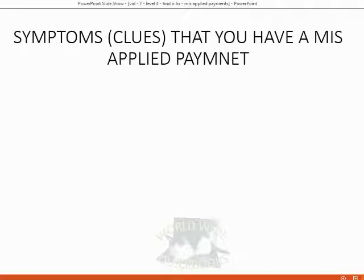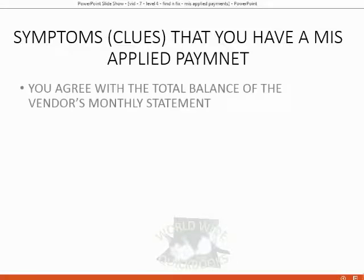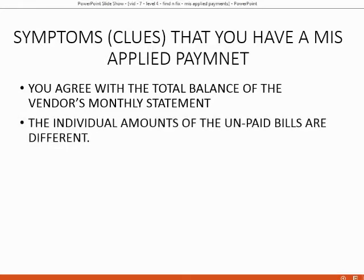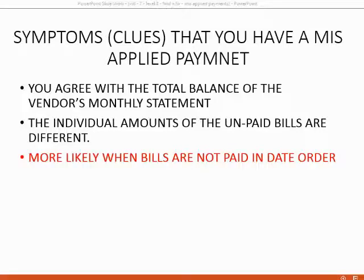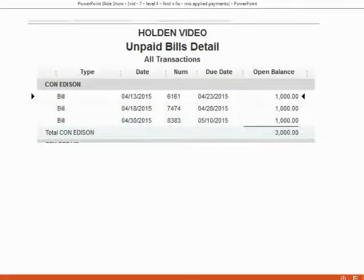Some of the symptoms or clues that you have a misapplied payment are: you agree with the monthly statement and the total balance the vendor is showing you, however the individual amounts of the unpaid bills are different. This is evidence that either we or the vendor misapplied one of the payments. Remember, a misapplied payment is more likely when bills are not paid in date order.